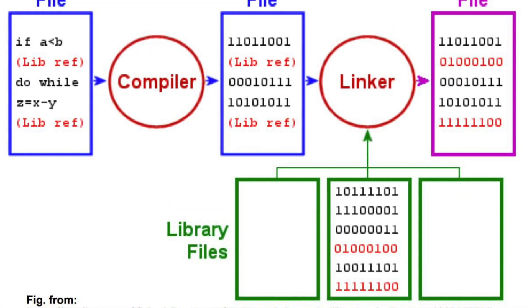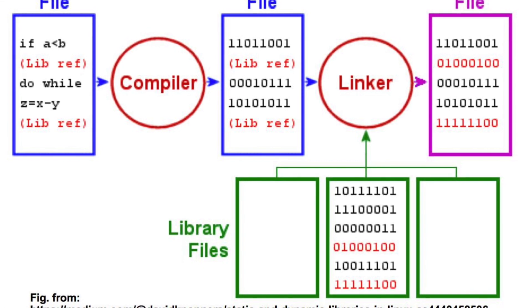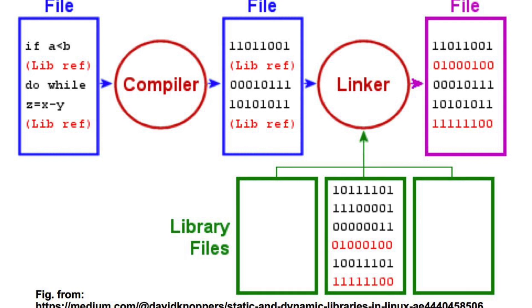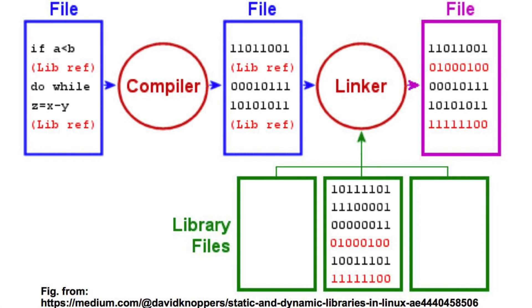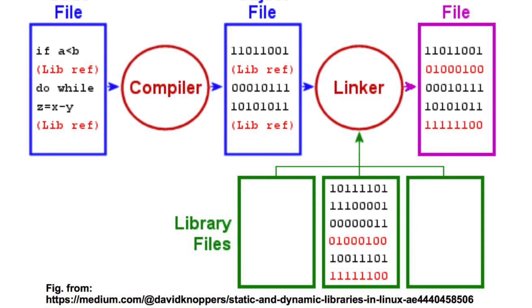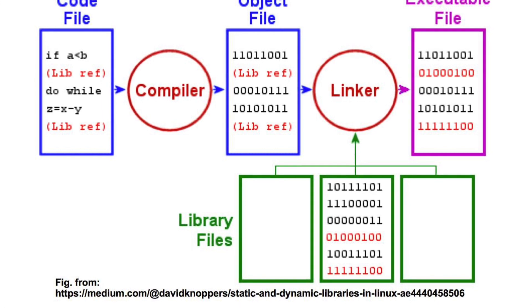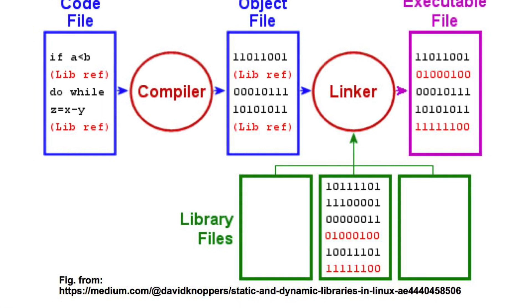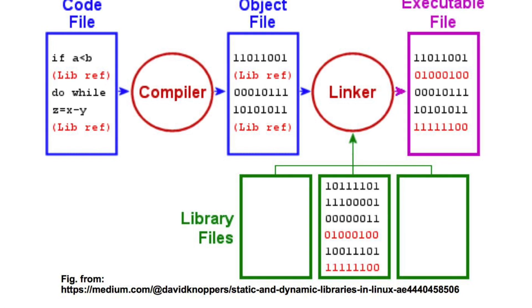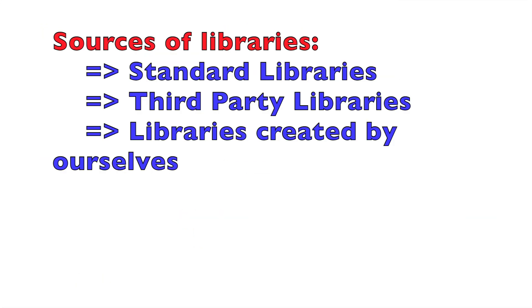When we write a program in languages such as C, C++, etc., generally we don't write everything ourselves from scratch. Rather than reinventing the wheel, we take advantage of other software components that are already available. We write our programs such that some part is original code, and the rest is simply the reuse of some pre-compiled program modules. These reusable pre-compiled modules are available either as standard libraries supplied by the creators of the compilers themselves, some third-party libraries, or libraries written and compiled by ourselves.